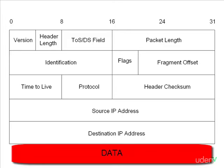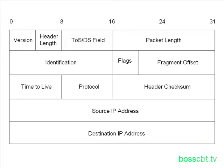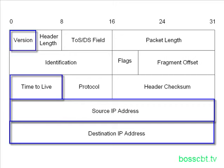Those are all the fields of the IP header. Keep in mind the version field, the time to live field, and the source and destination IP address fields — those come up most often at this level of network administration. That's it. Thanks for watching.